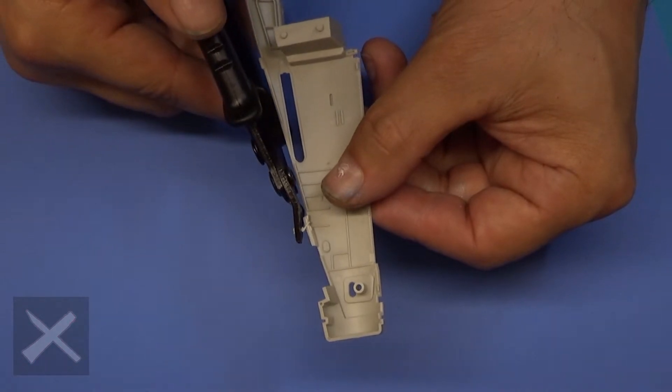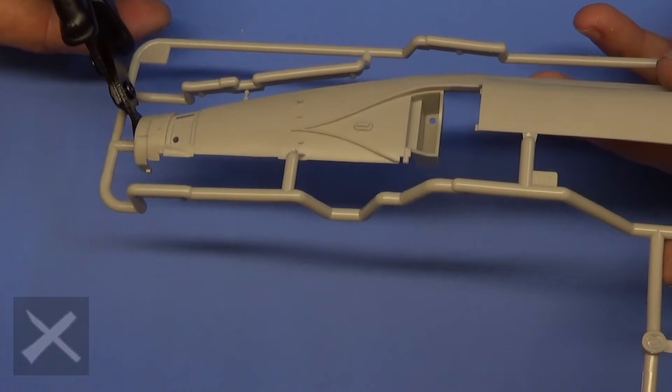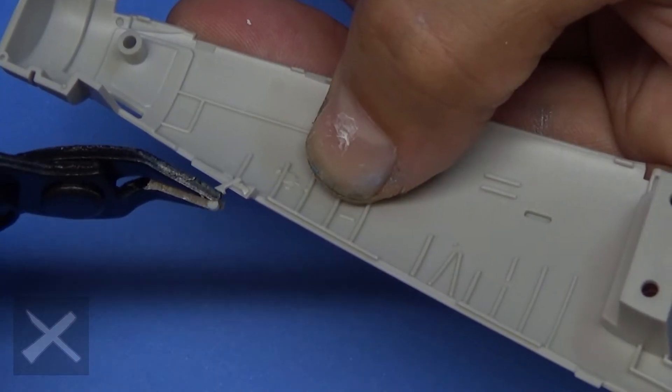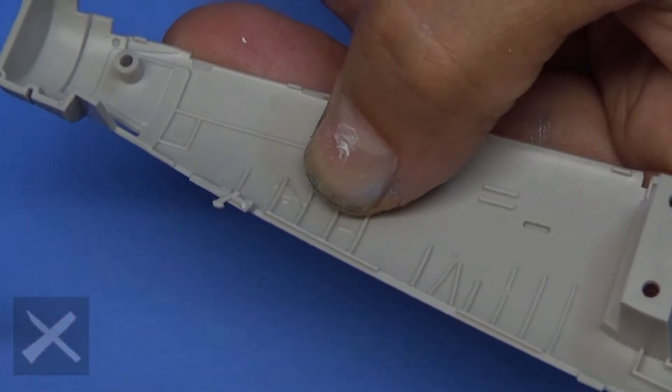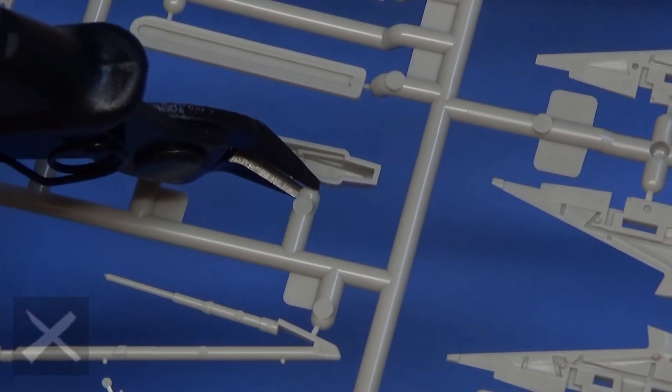We've got our fuselage halves here. We're going to start preparing these for assembly. This is a wonderful model. I love doing this one. It's my first expensive model that I got. So by you watching this, I hope you see it and you want to do it too.